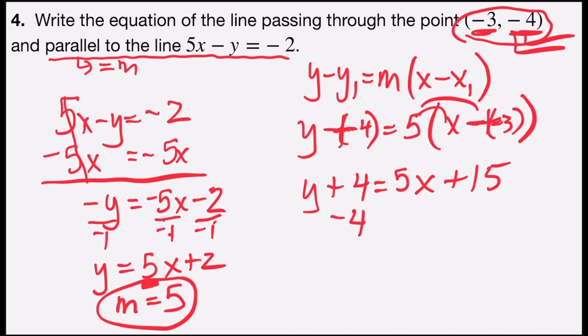Last step, we'll subtract 4 from both sides in order to solve for y. 4 - 4 is zero. Zero plus y is y = 5x, and 15 - 4 is 11.